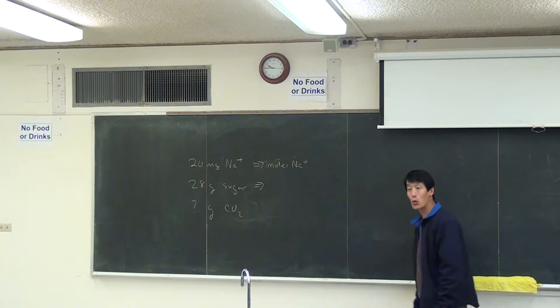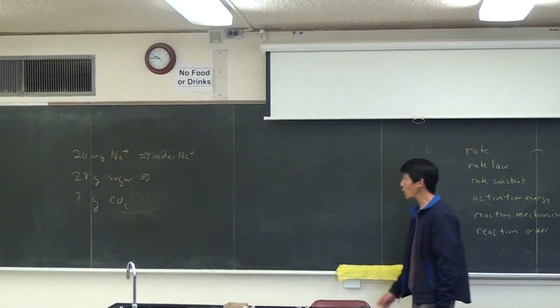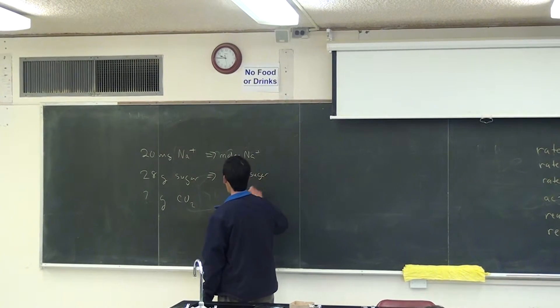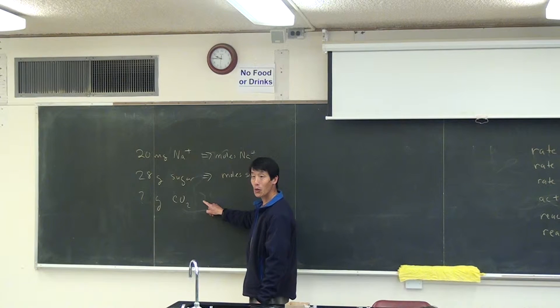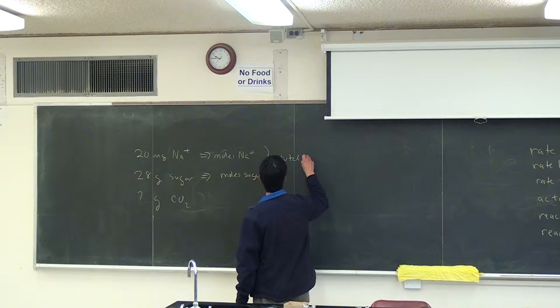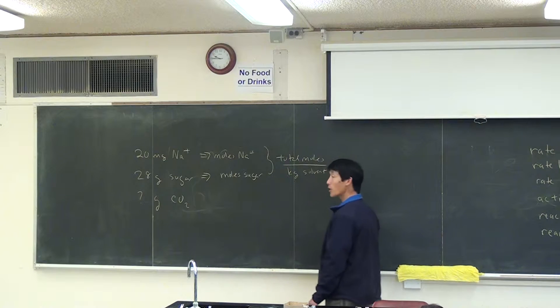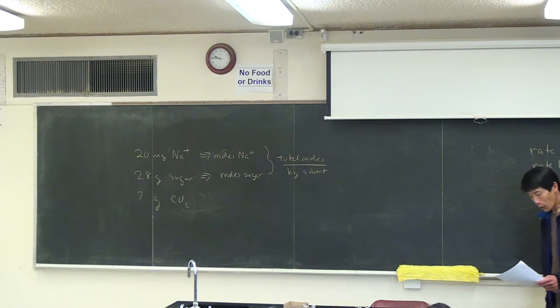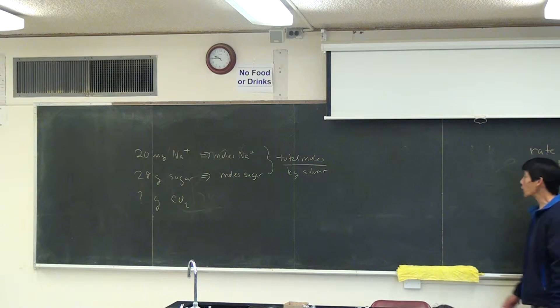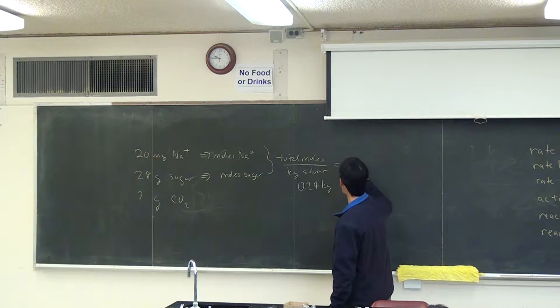The sugar, you can either say it's glucose C6H12O6 or sucrose C12H22O11, although I don't really care, whichever one you use. And you convert to moles of sugar, and you're not given the mass of CO2, so you can just leave this out. So what you would do is just take the total moles, divide this by the kilograms of solvent, and since the volume of Pepsi is 8 ounces or 240 milliliters, you can assume that the mass of solvent is 0.24 kilograms.